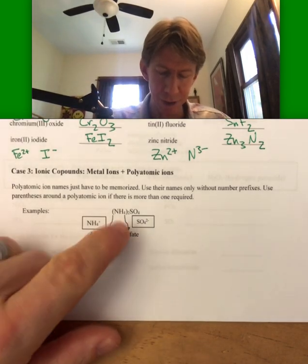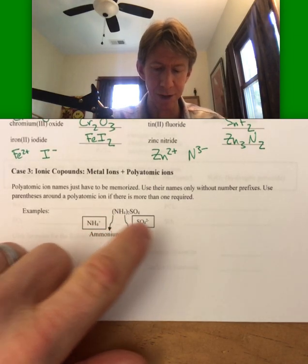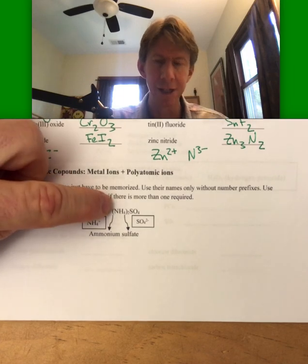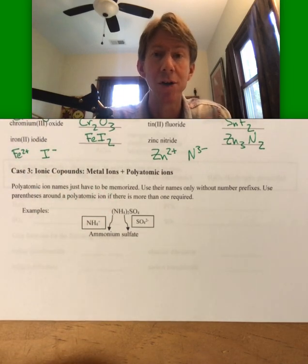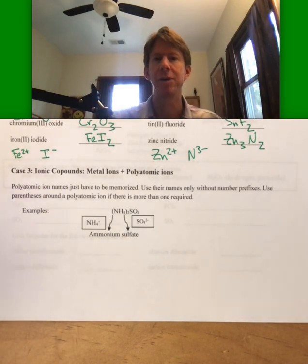And you do have to use, since it's plus one here, and you need two of them, when you crisscross the charges, you want to make sure that you're getting all two of the ammoniums, and so you have to put a parenthesis around the whole ammonium ion.